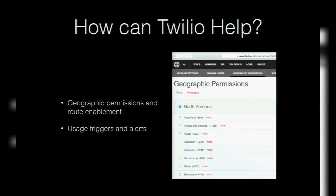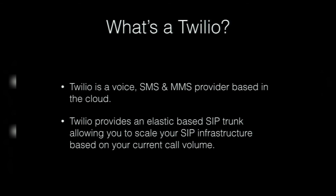So how can Twilio help? We have a number of things that sit off-platform to support the security of your trunks and Asterisk server. We have geographic permissions and route enablement — if you only want calls to the United States, you can turn off calls to all other parts of the world and Twilio will simply reject them on your behalf. We also provide usage triggers and alerts: if you normally consume 500 or 1,000 minutes weekly and you've already hit that threshold by Tuesday, you can fire off an email or webhook into a Slack channel.